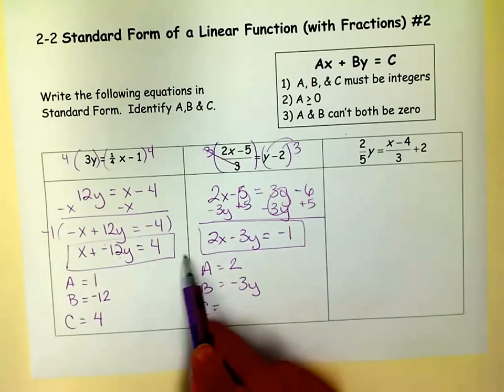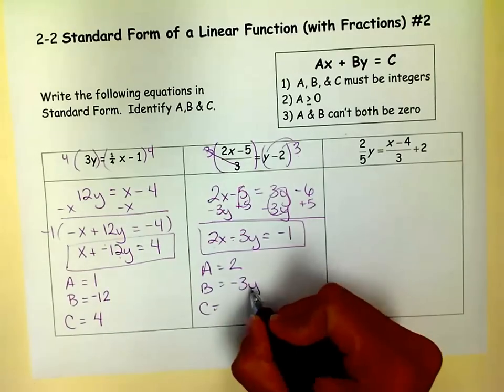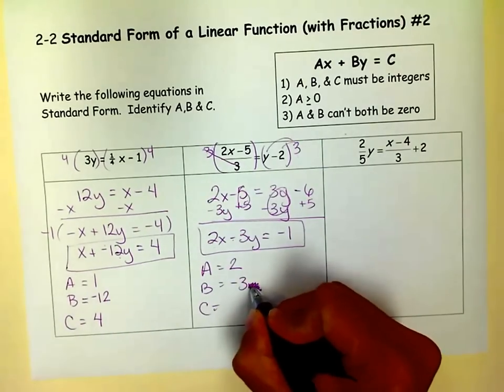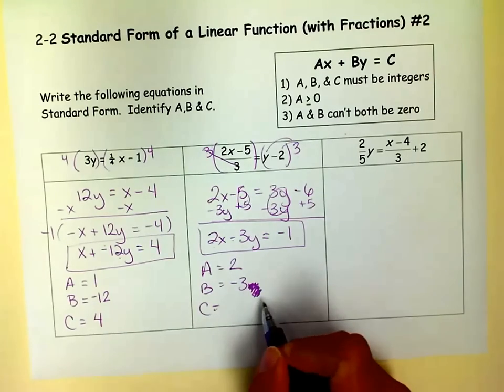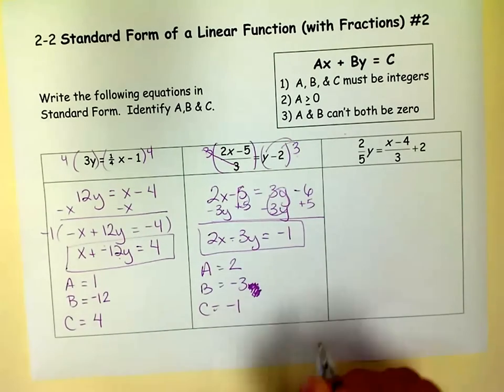It doesn't matter which way you see it. If it's a minus sign or a negative 12, the answer is negative 3. Not negative 3y. We just want the B. So be careful with the negatives. And then the C is negative 1.